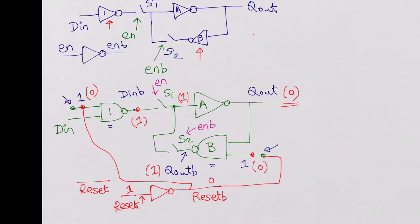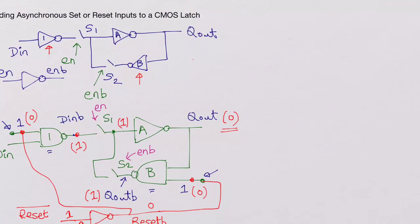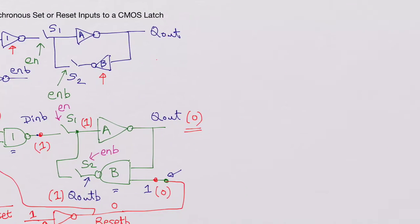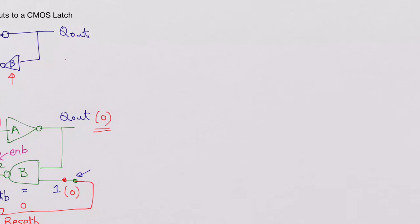So this is how you introduce a reset signal. If you want a reset input instead of reset bar, you add an inverter: reset goes in, reset bar comes out, and reset bar connects to both NAND gate inputs. When reset is high, reset bar is low, and Q out is forced low — the latch is reset. Now to introduce a set signal, we can modify the circuit in a different way.